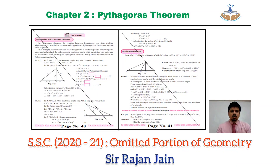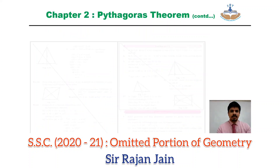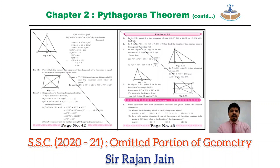Now let's go to chapter number 2 — Pythagoras theorem. Directly come to page number 40. On page number 40, you will see application of Pythagoras theorem — that is omitted. On page number 41, Apollonius theorem is also omitted. Entire page number 42 is omitted.